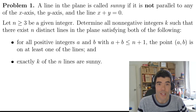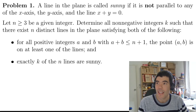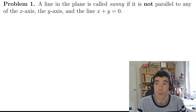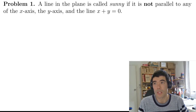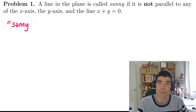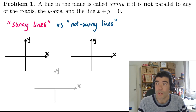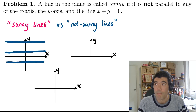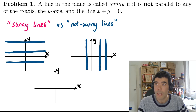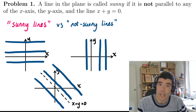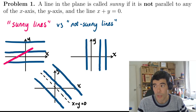The International Math Olympiad is always a great source of really nice maths problems, and this one is no exception. A line in the plane is called sunny if it is not parallel to the x-axis, the y-axis, or the line x plus y equals zero. So sunny lines are defined by what they are not: horizontal lines, vertical lines, or lines with gradient negative one are not sunny. Anything not parallel to those three will be a sunny line.